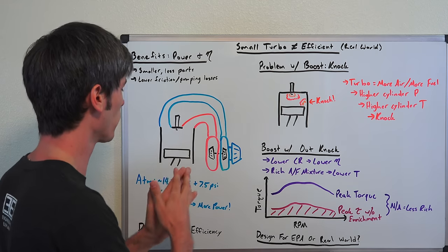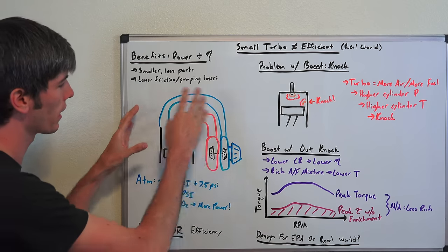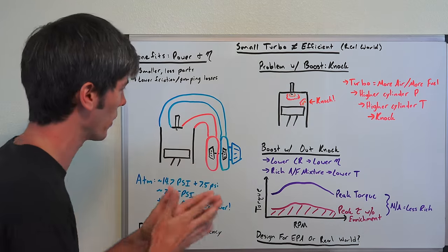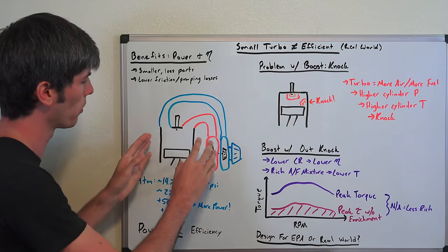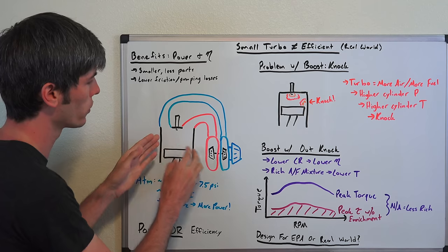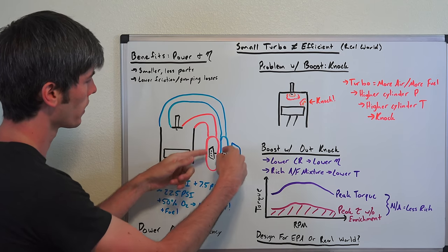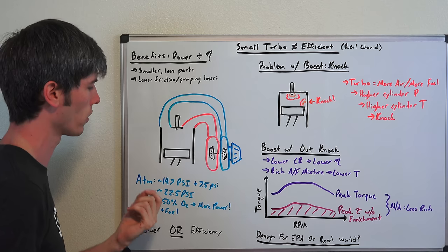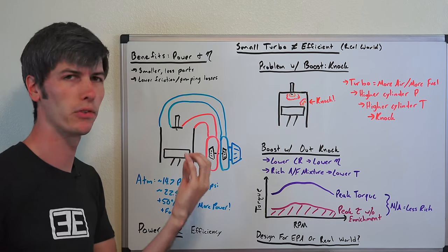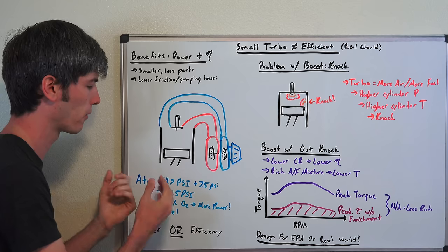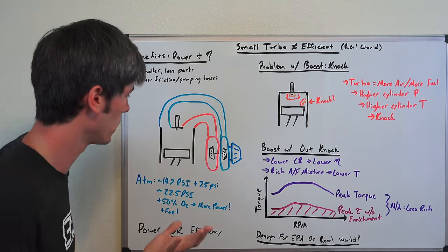But then you start asking for power and things change up a bit. Looking at an engine here, and I've got plenty of videos talking about how turbochargers work, but a very simple representation. We've got our engine, the turbocharger. This thing spools up with the exhaust gases and pulls in additional air. Let's say we have atmospheric pressure within this engine, that's about 14.7 or about 15 psi.